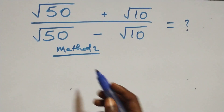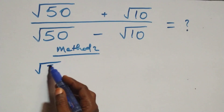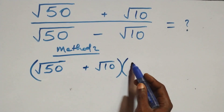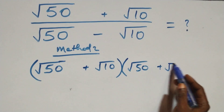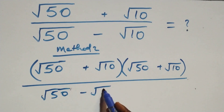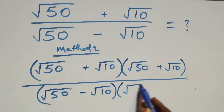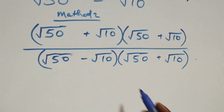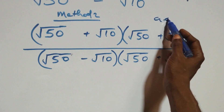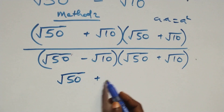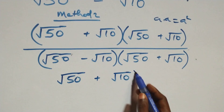In Method 2, we rationalize directly. We have (√50 + √10) / (√50 − √10) and multiply both numerator and denominator by the conjugate of the denominator, which is (√50 + √10). So we multiply by (√50 + √10) / (√50 + √10). The numerator becomes (√50 + √10)², since a × a = a².